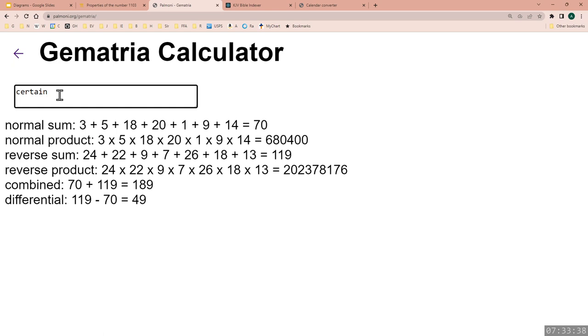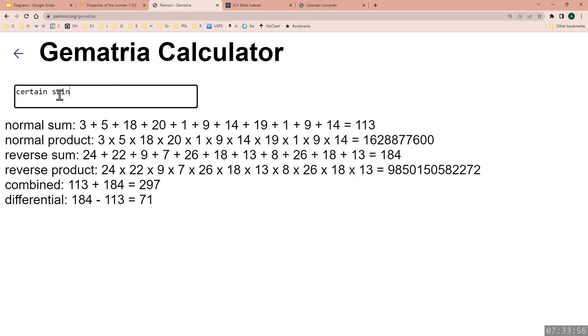Now, I want you to see something here. Here you have the reverse sum of the word certain, and it shows one, one, nine. Now, would you add to certain the word saint? Here, for the reverse sum, you have one, nine, one.